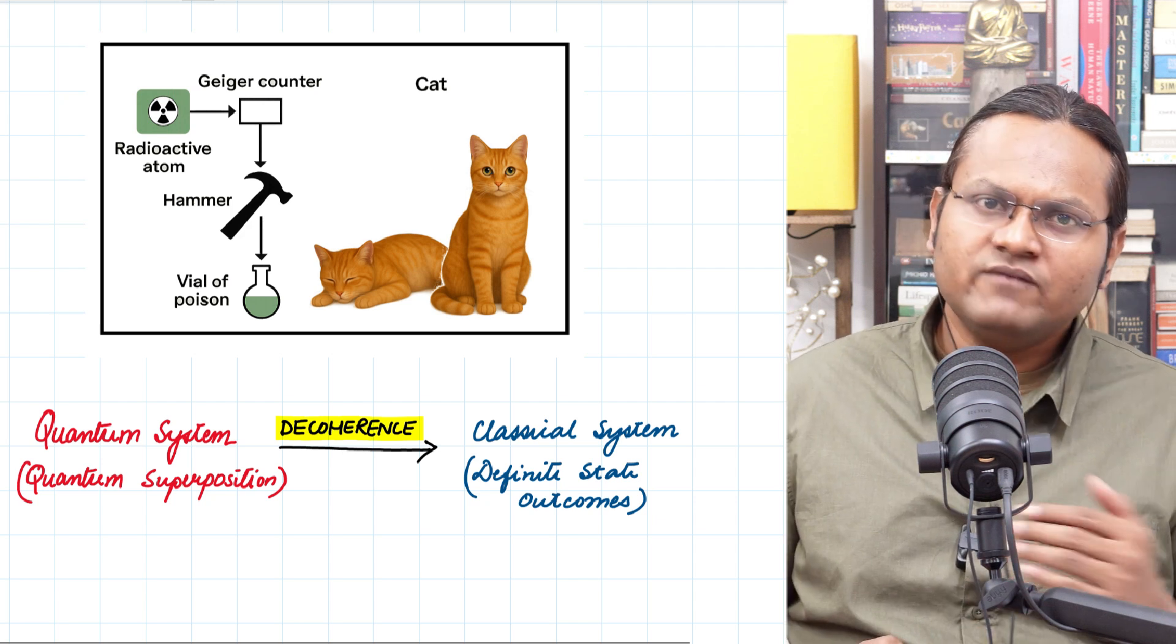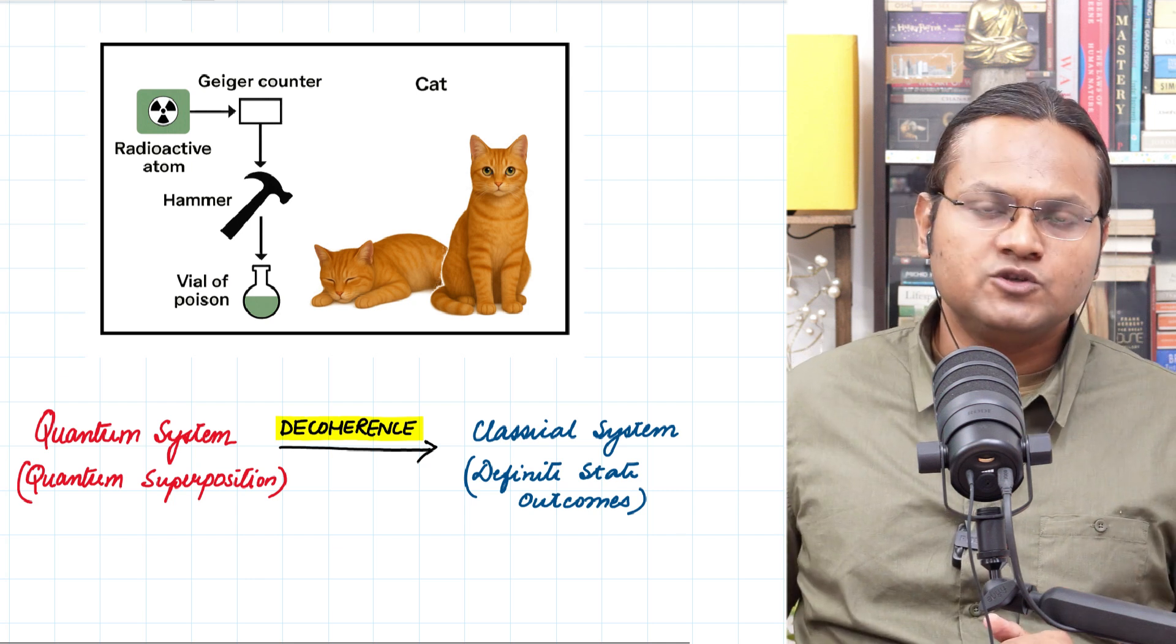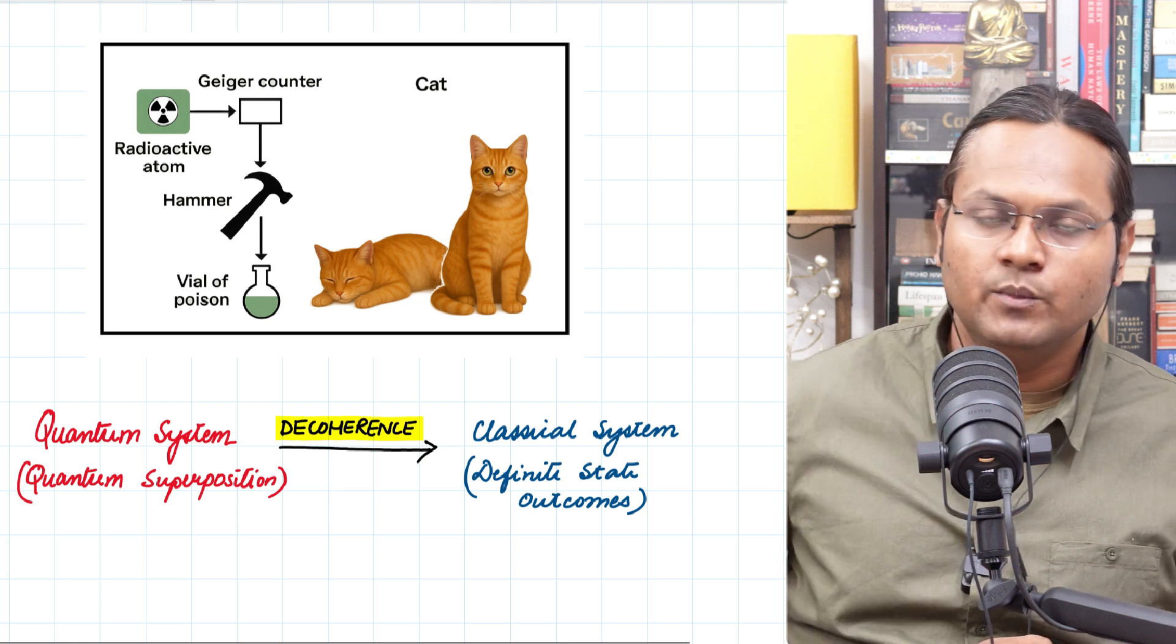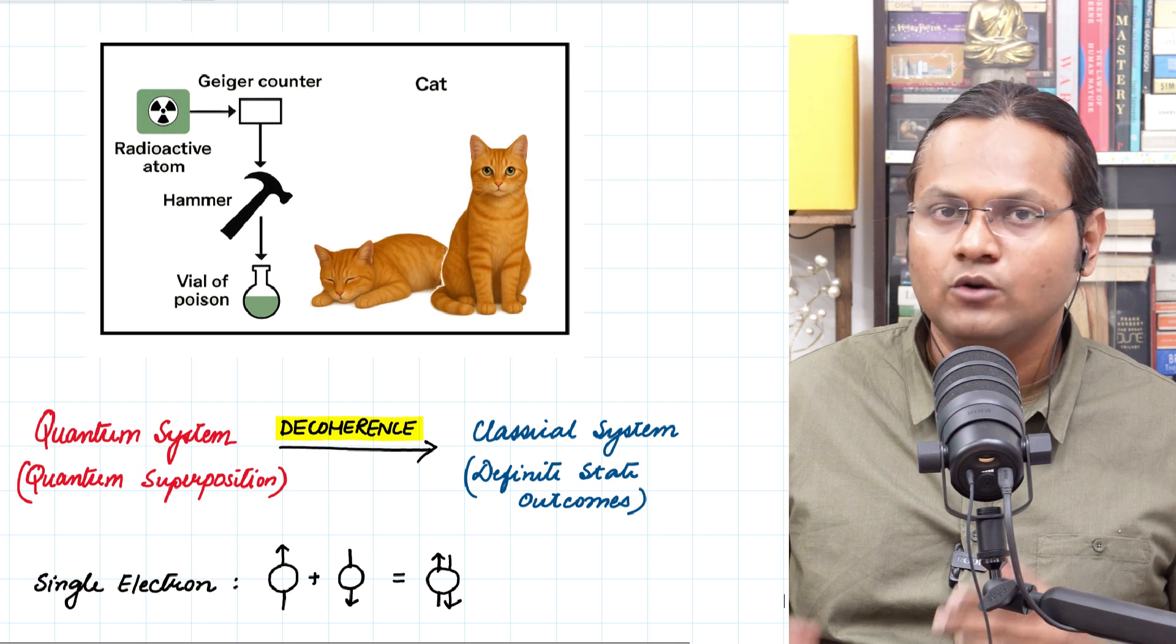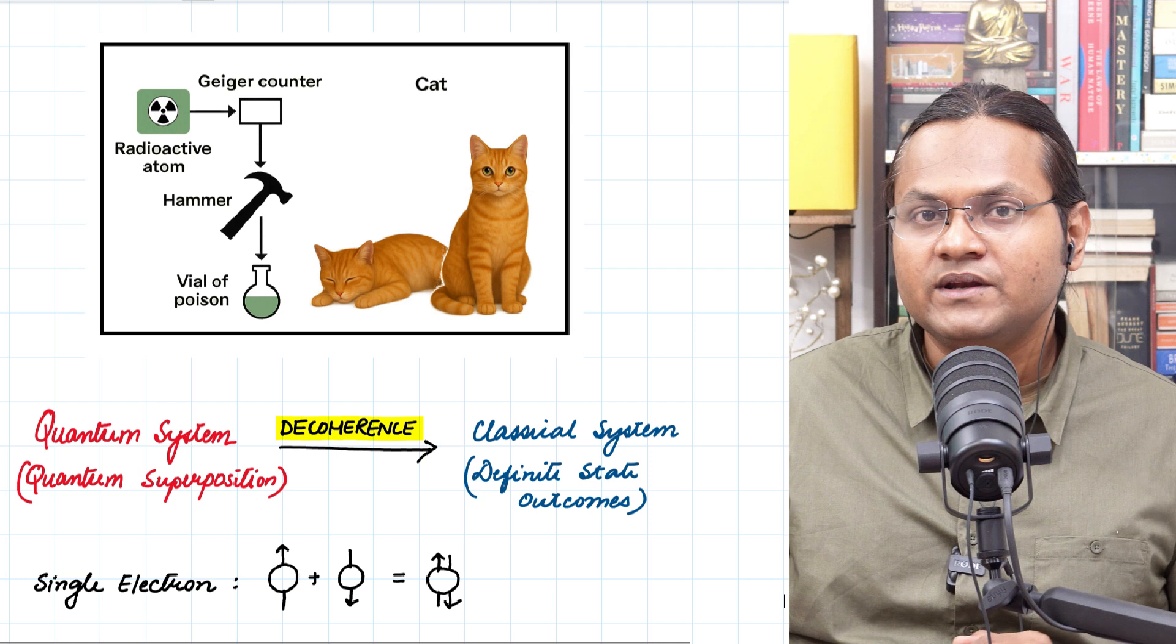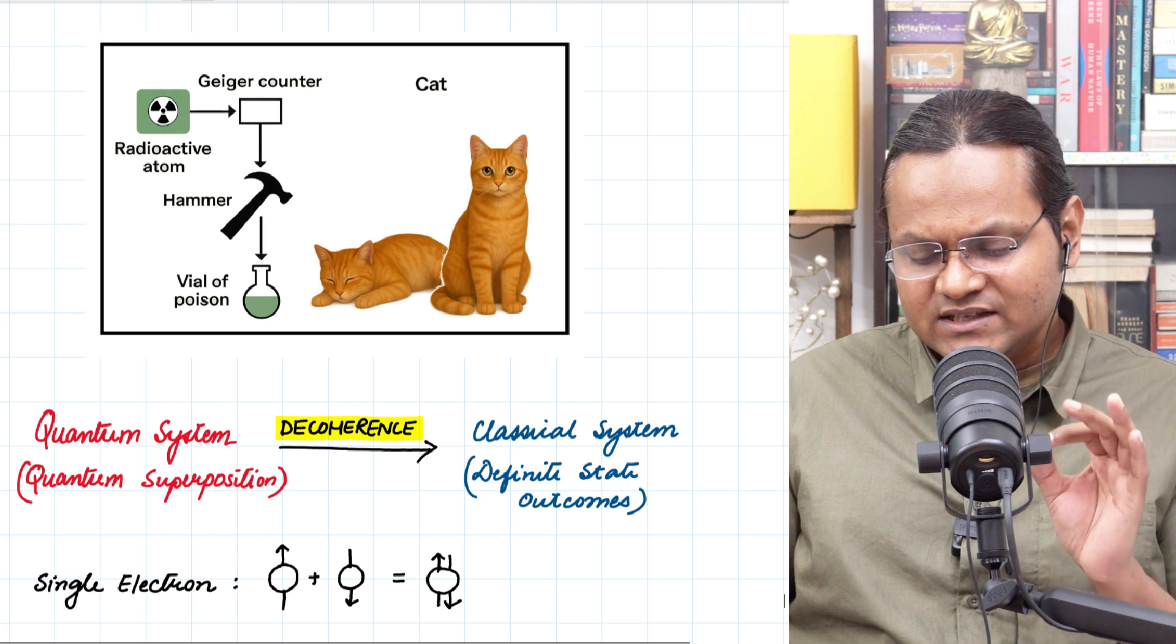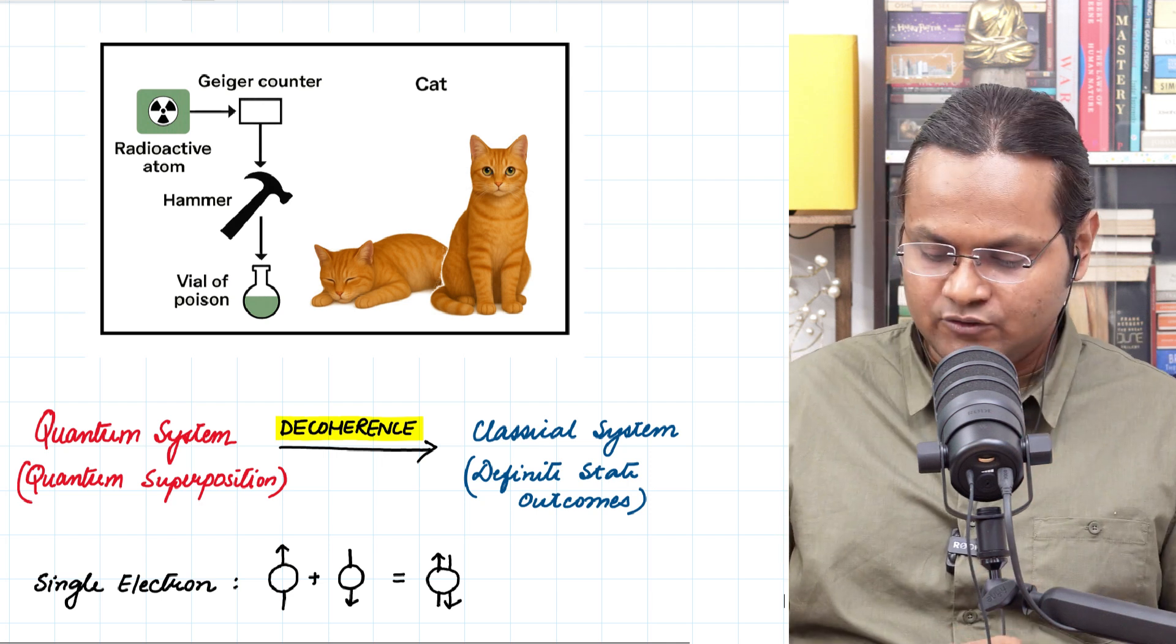So what happens is that whenever a quantum mechanical system is studied in an isolated manner, we have this kind of a quantum superposition. But the moment it starts interacting with environment, it loses this quantum superposition. Let's understand it using this example. So if you have a single electron, we know that a single electron can have two different kinds of spin. The electron can be described as a superposition of both the spin up and the spin down states. But this is true only for a singular electron, an isolated electron.